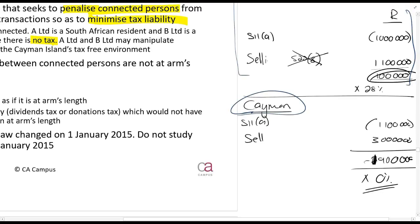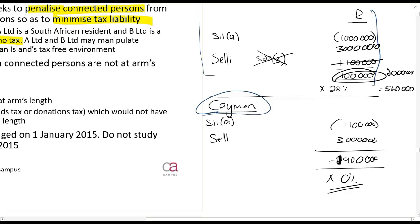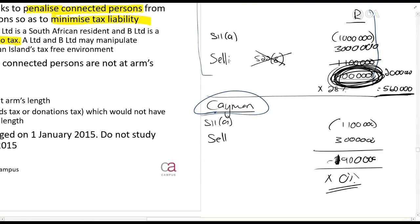So what is the effect? The total amount of tax paid is only 100,000 rands. If the first company had sold it for 3 million as it should have, the taxable income would have been 2 million and the tax on that would have been 560,000 rands. They manipulated tax — instead of paying 560,000 rands, they only paid 100,000 rands. This is just one way in which people can manipulate transactions.